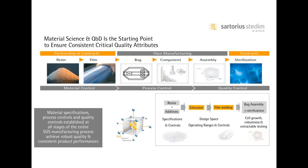The complete control of the process over the entire life cycle provides the guarantee of lot-to-lot consistency for cell growth, for example, for robustness, or for extractable and leachable profiles. Finally, material specification, process controls, and quality controls established at all stages of the entire single-use system manufacturing process achieve robust quality and consistent product performances.